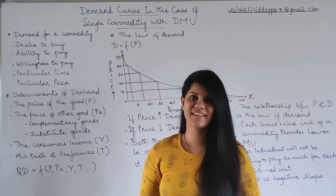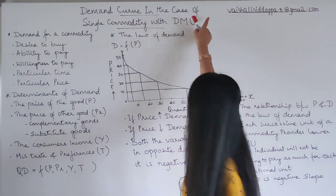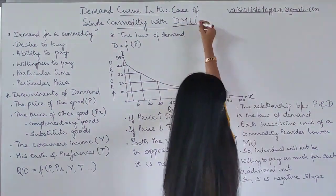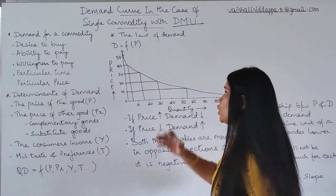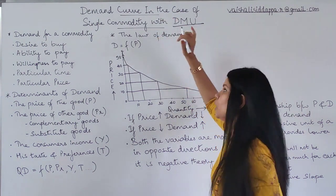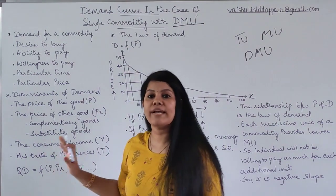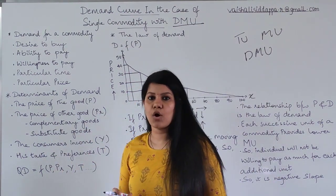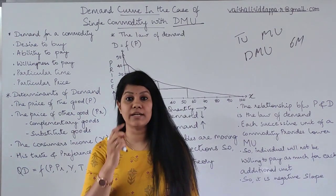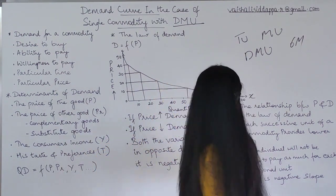Good morning and welcome to the channel. Today's class is about the demand curve for a single commodity, considering diminishing marginal utility (DMU). To understand this topic, you need to see the previous two classes on total utility (TU), marginal utility (MU), and diminishing marginal utility. This topic, like the law of diminishing marginal utility, is a six-mark question.